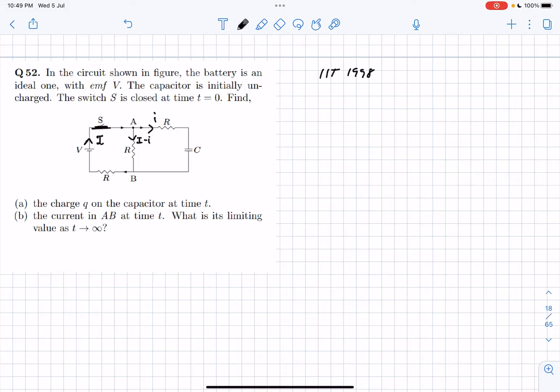Now we have two variables, capital I and small i. Let's assume the charge on the capacitor is Q. We have to find I first in terms of R and V, then write I equals dQ by dt and solve this integral to finally get the charge as a function of time.